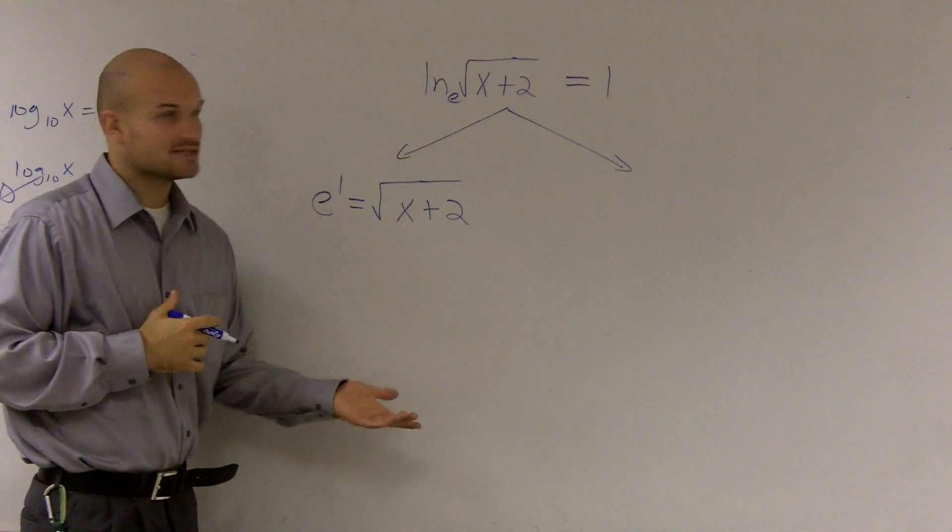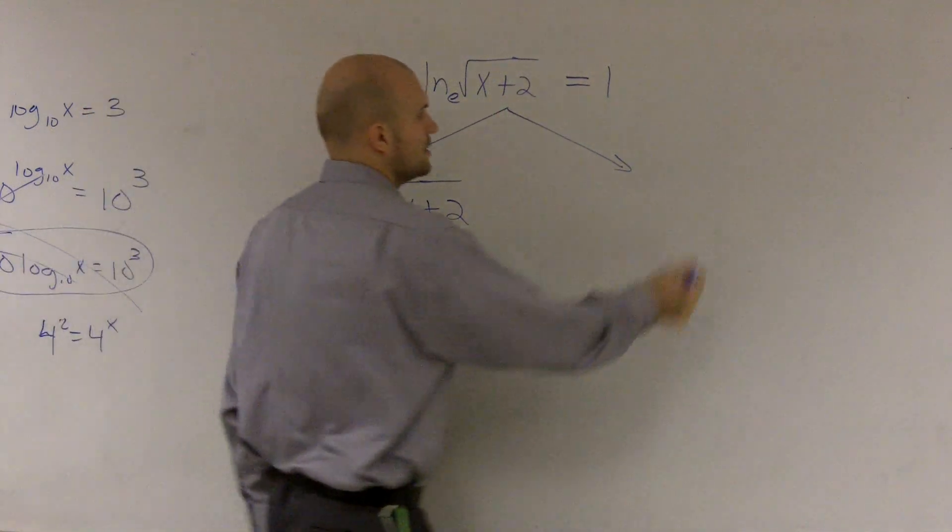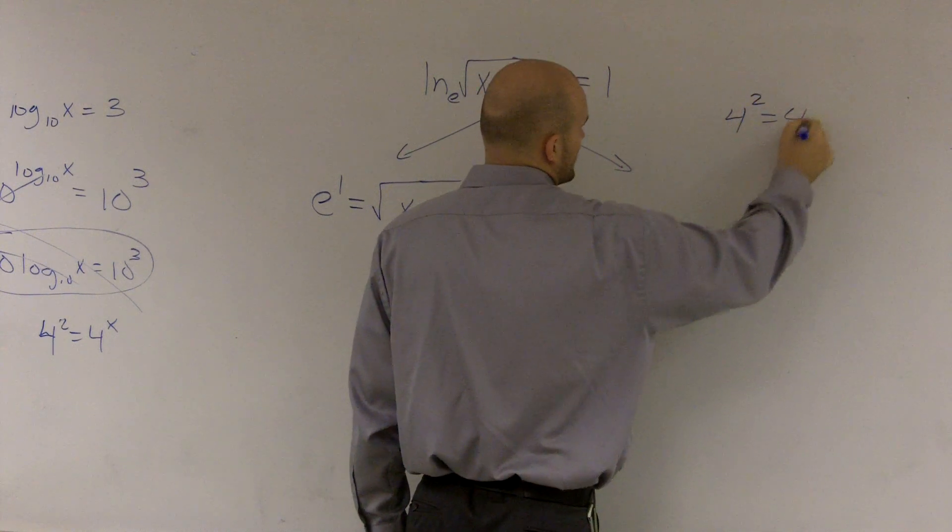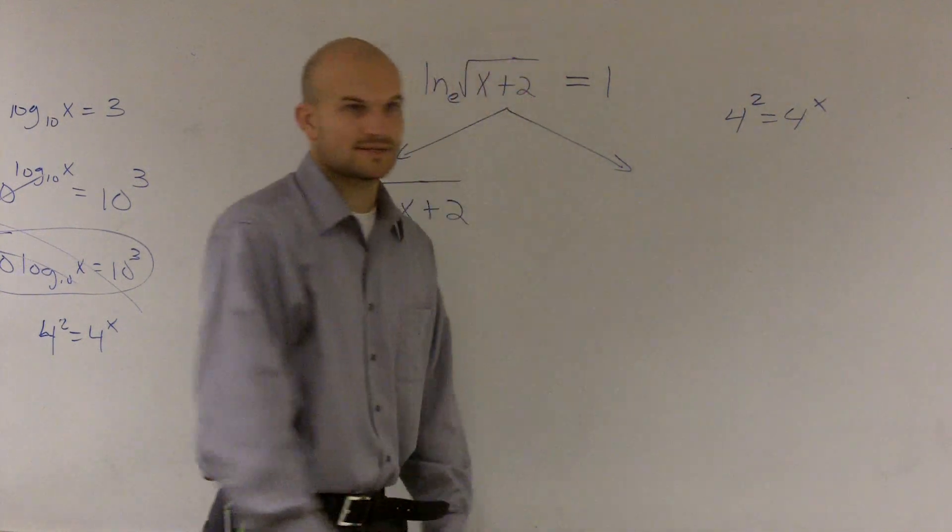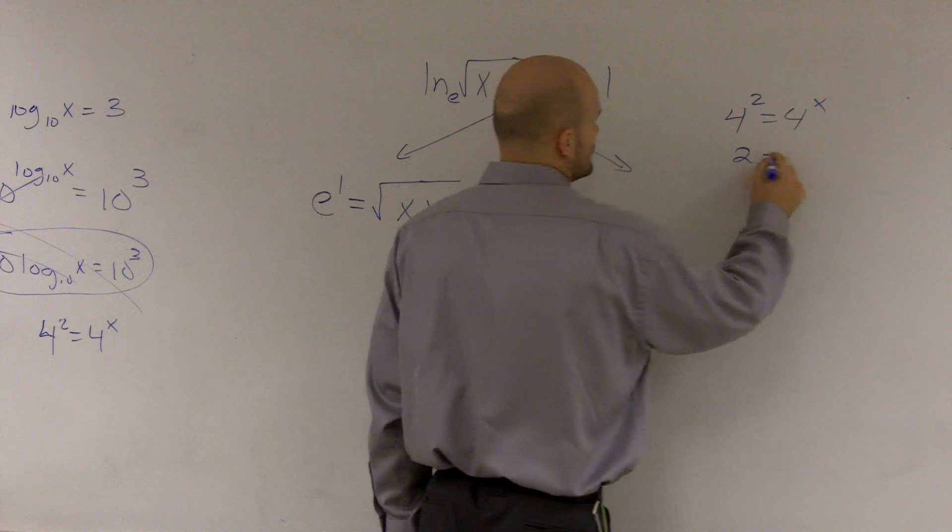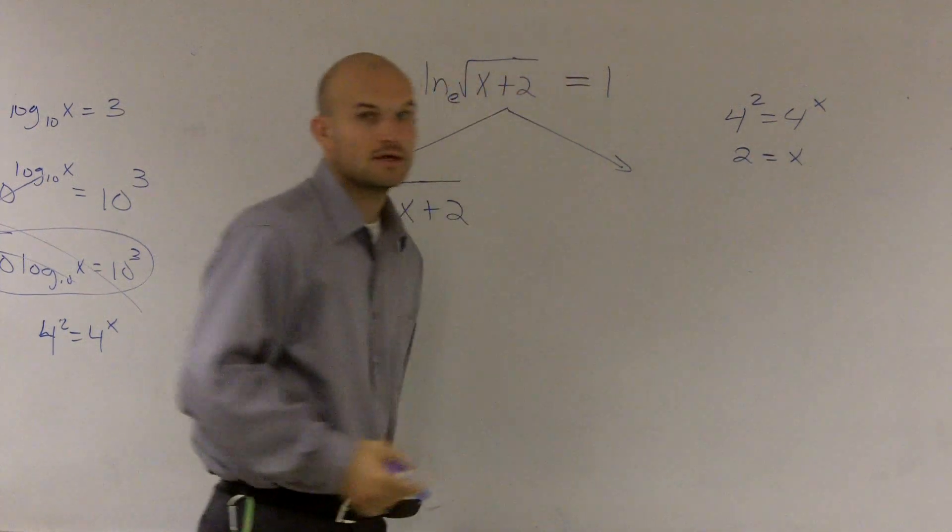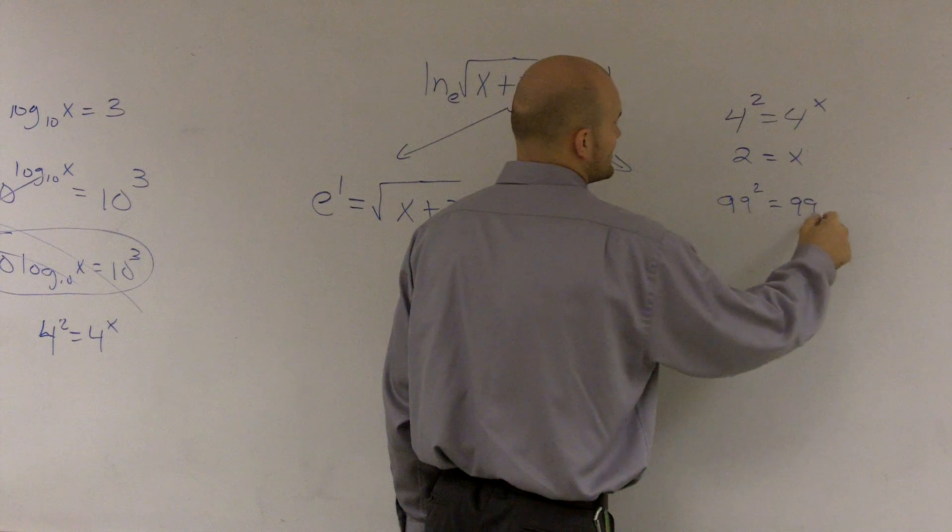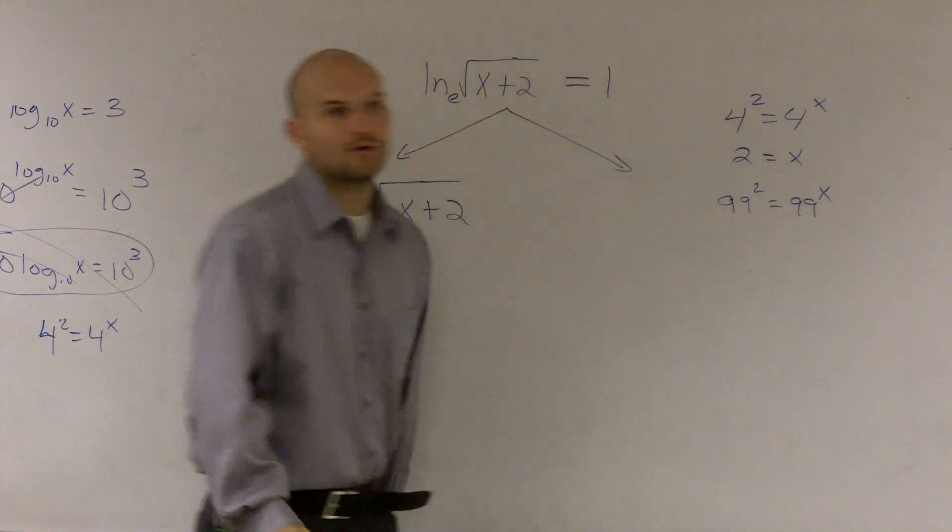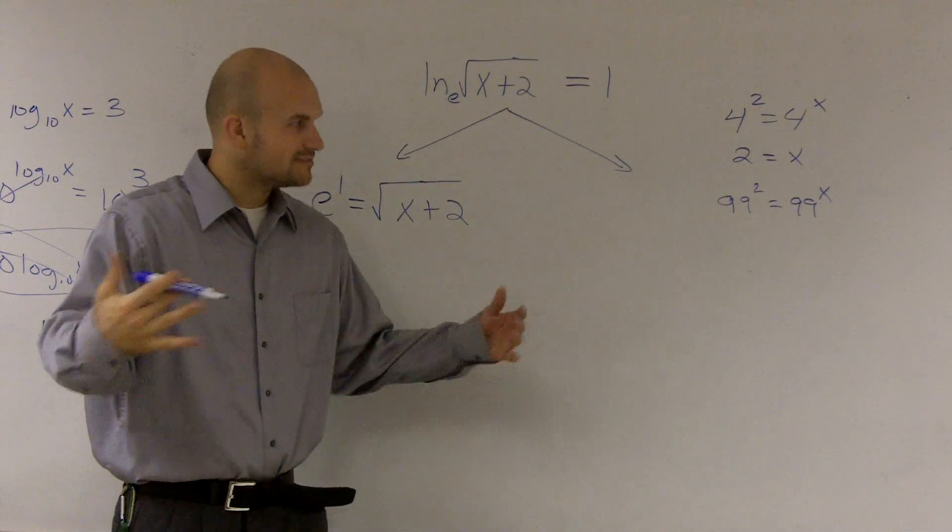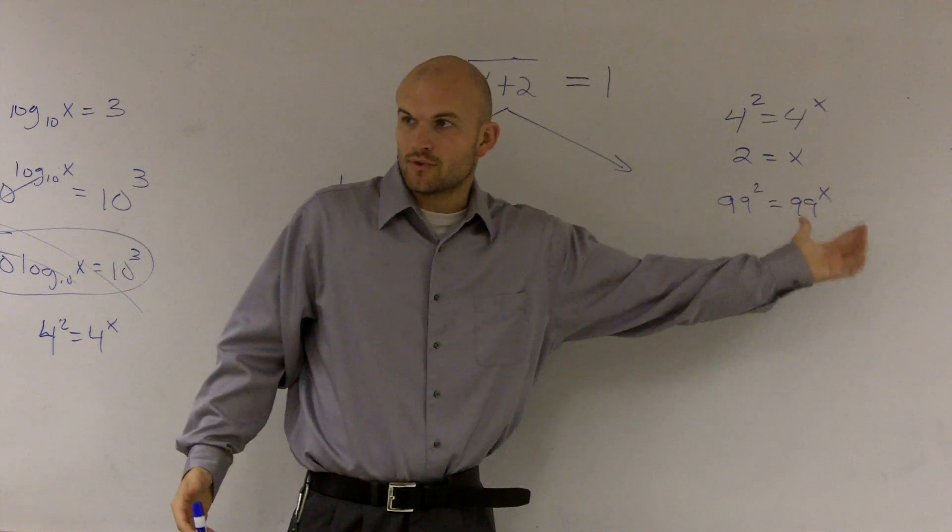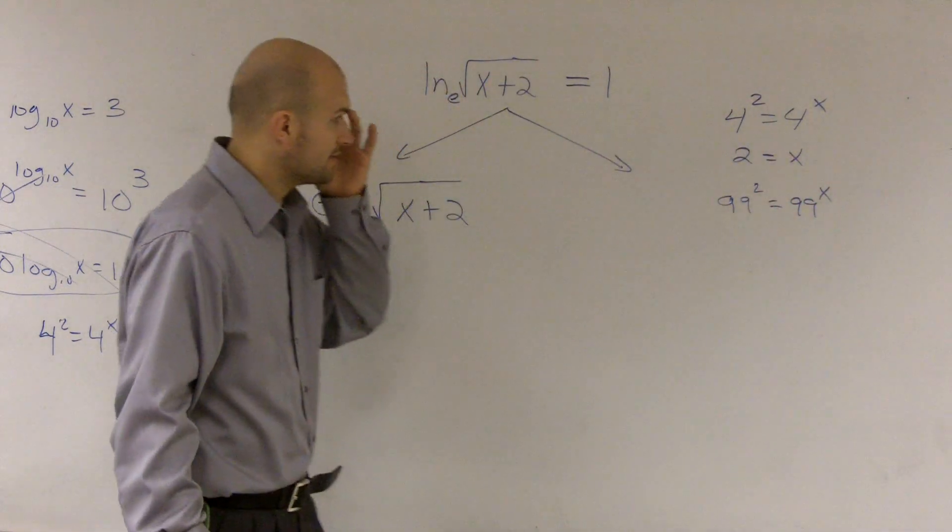The other way we can look at this is, you guys remember I talked about this: 4 squared equals 4 to the x. You should probably almost be bored with this. So then you know that 2 is equal to x, right? Could I raise 99 squared equals 99 to the x? Is 2 still going to equal x? Yes. So it doesn't matter what base I raise this or what base I use.